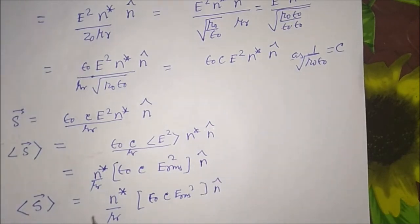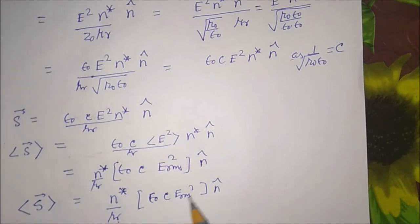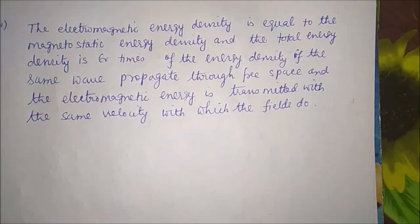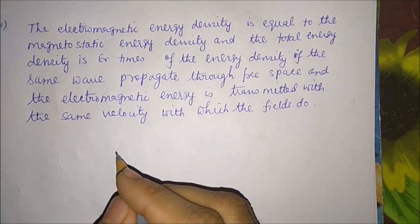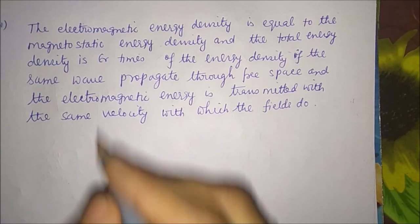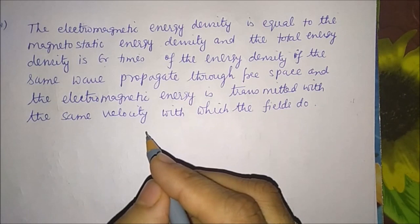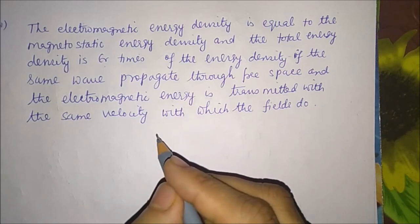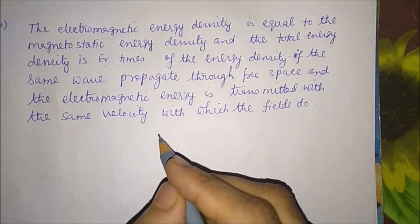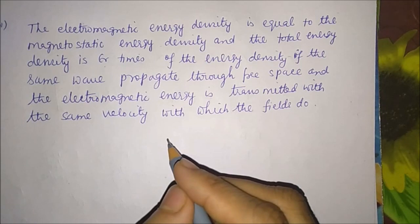So we find that the average value of the Poynting vector in this case is n*/mu_r times the average value of the Poynting vector if the wave had been traveling in free space. The fourth consequence: the electromagnetic energy density equals the magnetostatic energy density, and the total energy density is epsilon_r times the energy density if the same wave propagated through free space, and electromagnetic energy is transmitted with the same velocity as the fields.